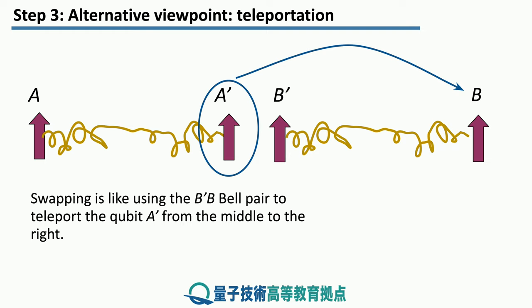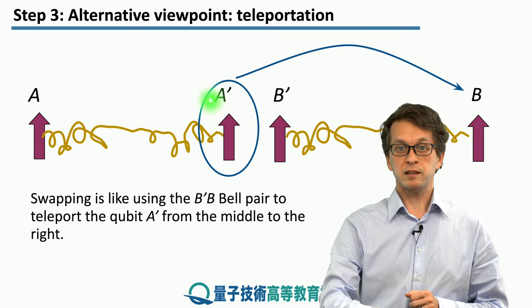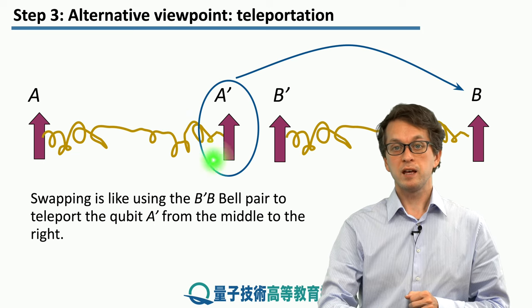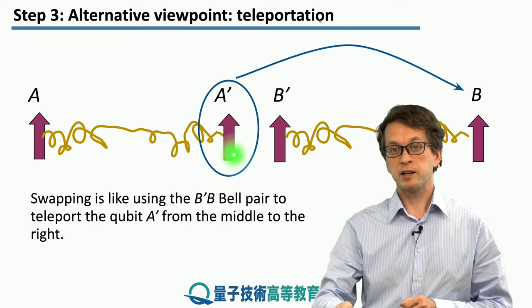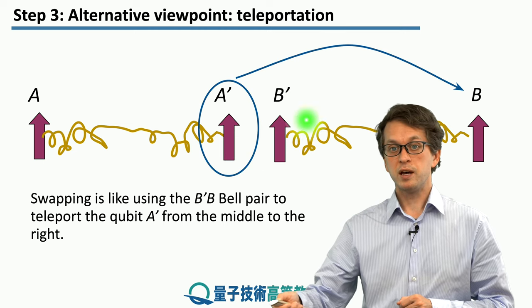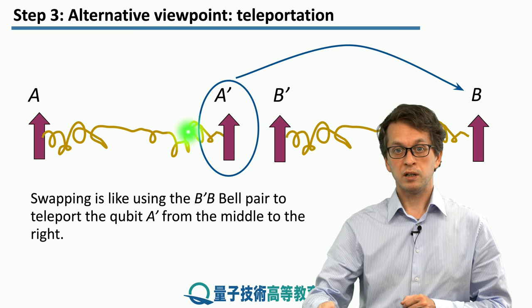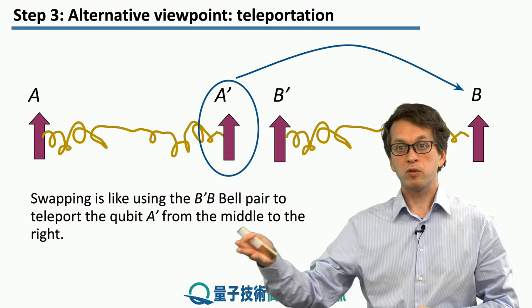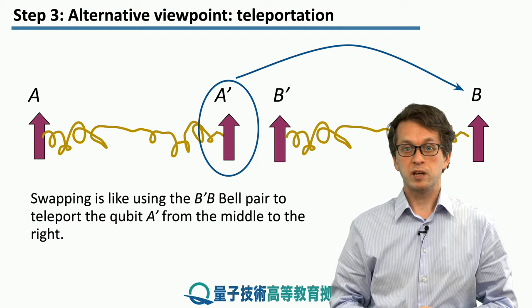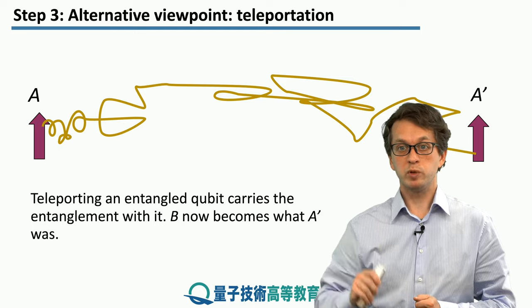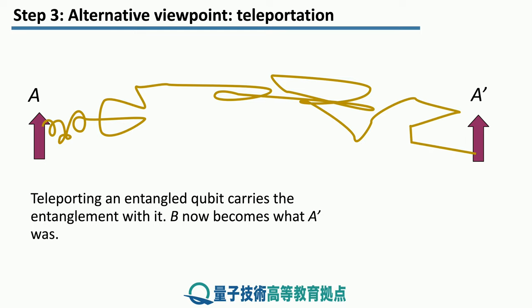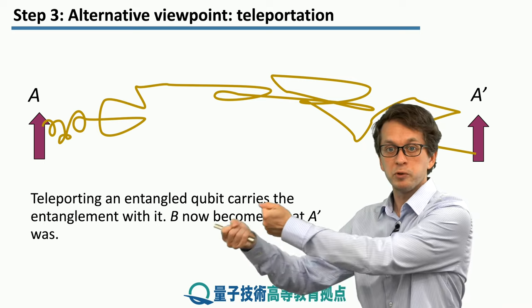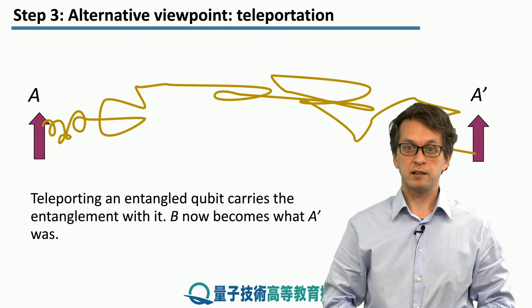An alternative way of understanding entanglement swapping is via teleportation. In teleportation, we possess some arbitrary state — say qubit A'. We share a maximally entangled state between qubits B' and B. By measuring A' and B' in the Bell state basis, we effectively transfer the state of A' onto qubit B. But A' was entangled with A, so it carries that entanglement all the way to B. This is another very neat way of understanding entanglement swapping.